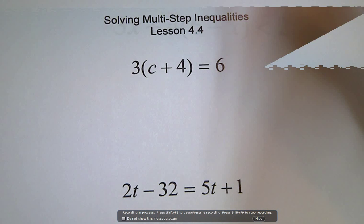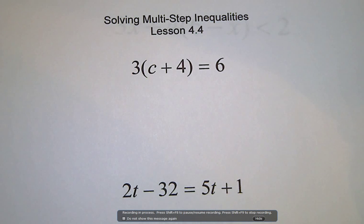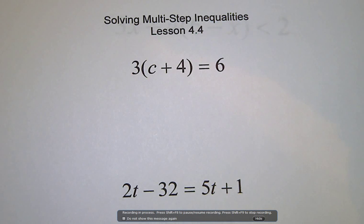This is lesson 4.4, solving multi-step inequalities. So far, all the inequalities that we've dealt with have just been one step, so we're going to start looking at some where we have to distribute, where we have grouping symbols, variables on both sides, things like that. So first, let's just look at what we do with equations with grouping symbols or variables on both sides.